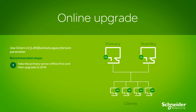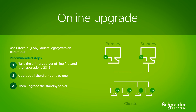If you cannot afford to stop production, then you want to perform an online upgrade to 2015. Here are some important considerations: set the earliest legacy version to the version you are upgrading from. Shut down the SCADA runtime on the primary server and follow the upgrade process. Then restart the upgraded primary server. The 2015 server will build a new alarm database and will import the historic data from the standby server. Upgrade your client nodes one by one. Once you are confident that synchronization of alarms and trends is complete and that your clients are working correctly, shut down your standby server and perform the upgrade process on the standby server.